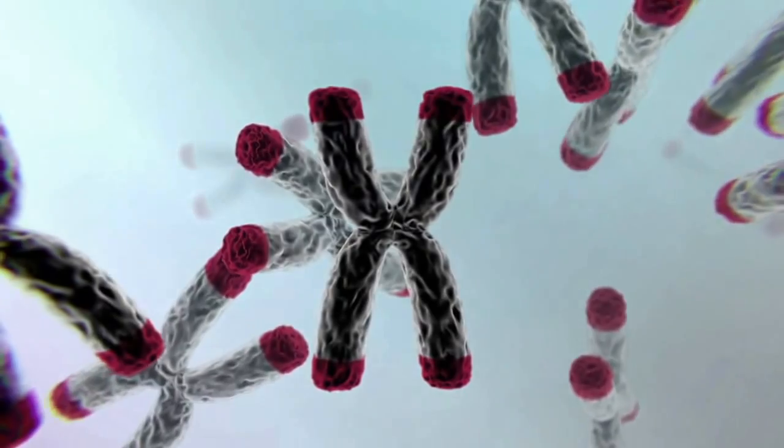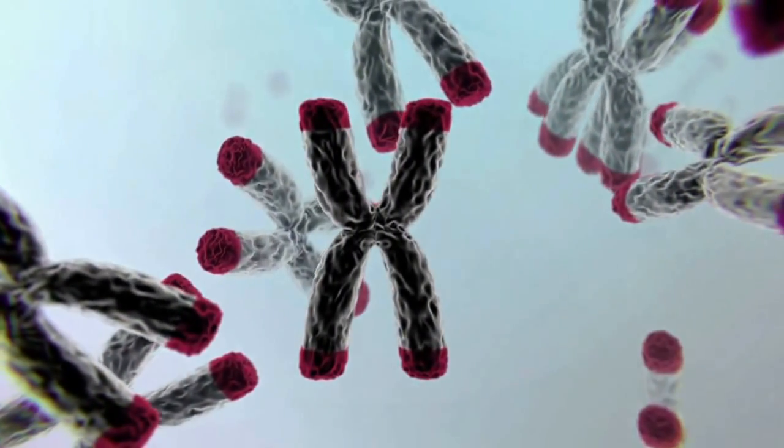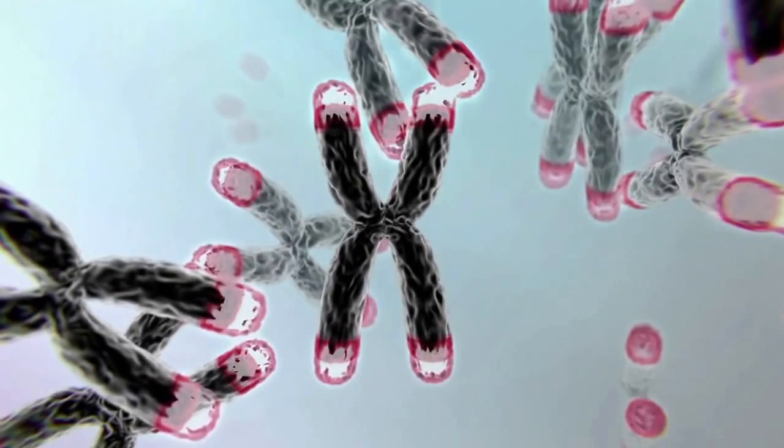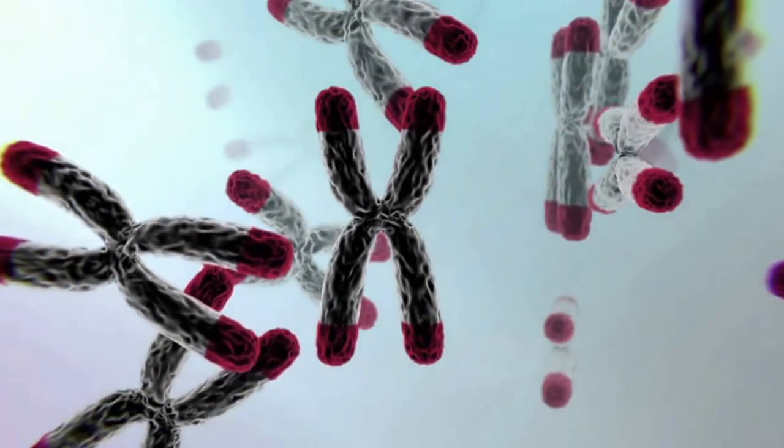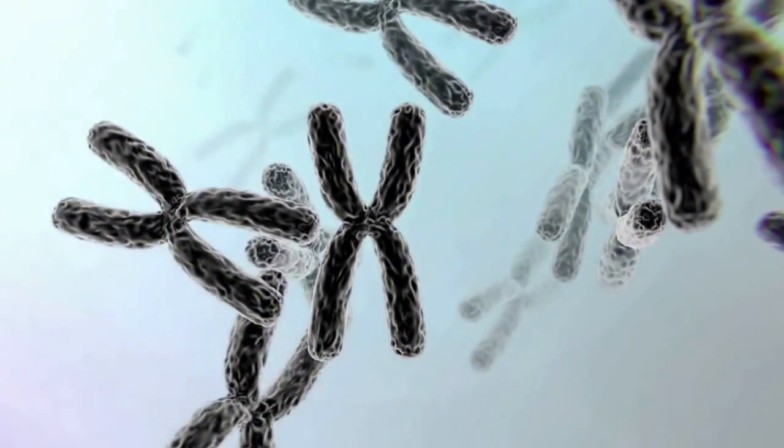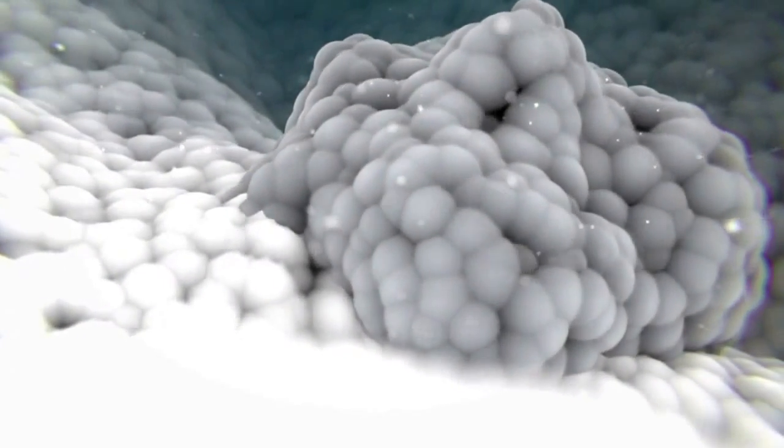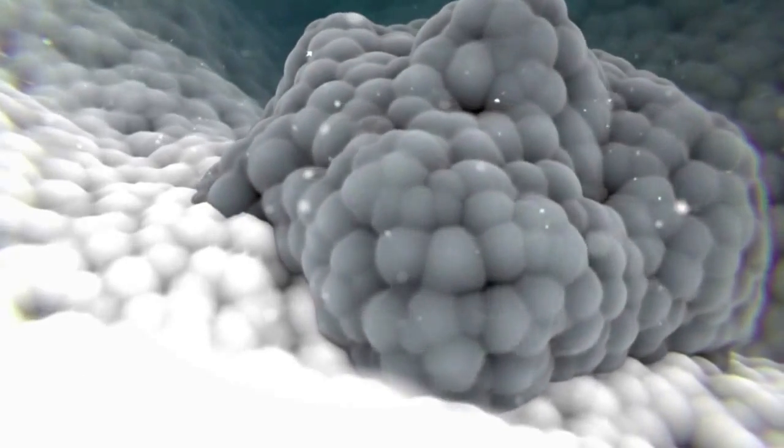Stem cells produce a special protein called telomerase that lengthens their telomeres before they get too short, so they can continue to produce the cells we need. Telomerase is not normally produced in other cells, but occasionally precancerous cells undergo mutations that allow them to make it.